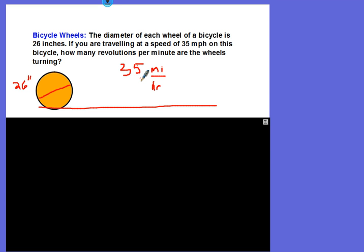This is going to be a units cancellation problem, meaning we have a lot of units we have to deal with. Notice that they give you the diameter in inches, but they give you the speed in miles. Miles per hour. So you're dealing with inches, you're dealing with miles, you're dealing with hours, and you're dealing with minutes.